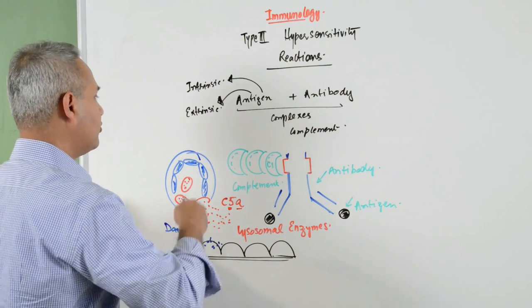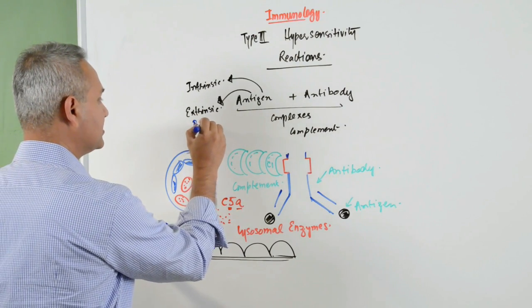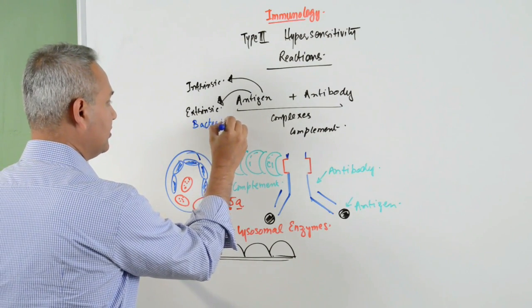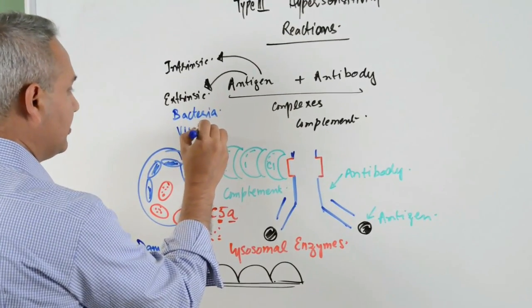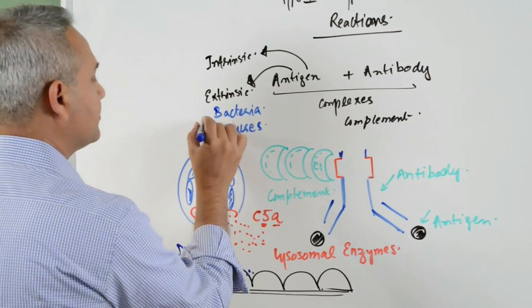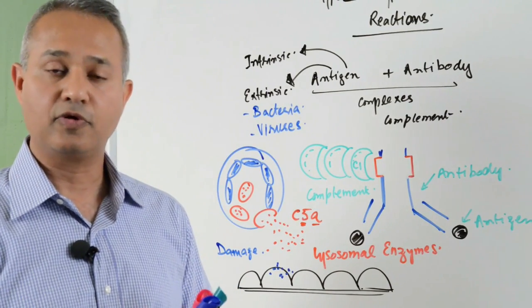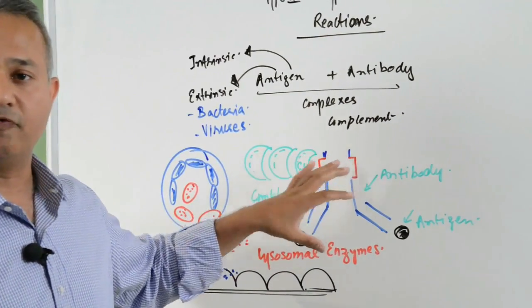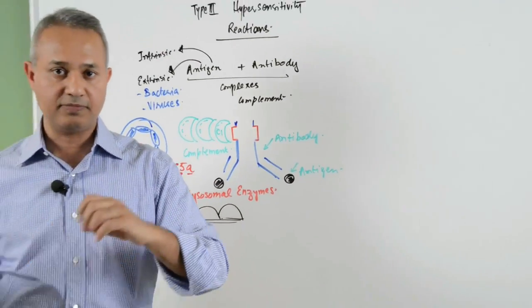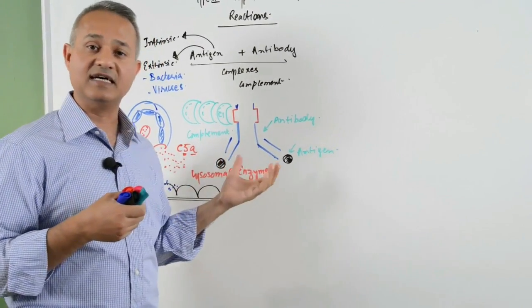That means we may have bacteria coming from outside or viruses coming from outside. That is the basic important thing. Now, the question is: why does this happen, why does this not happen to normal people, and why in some people does this happen?